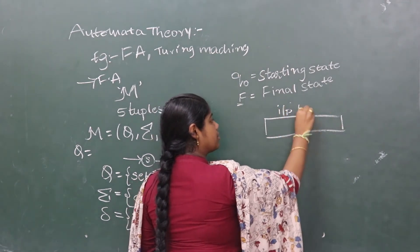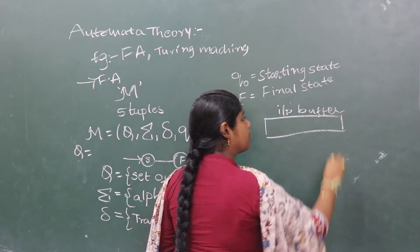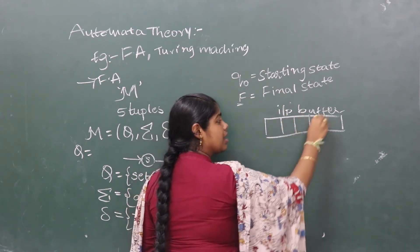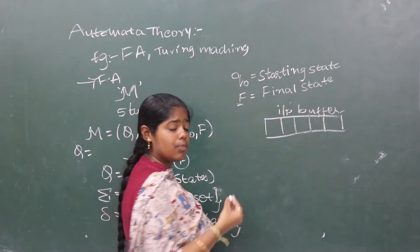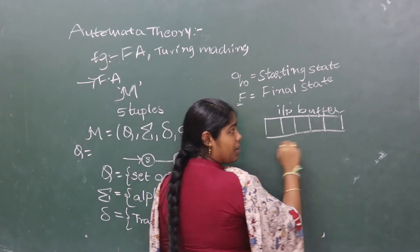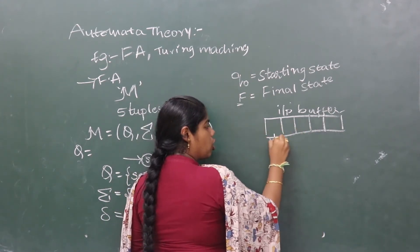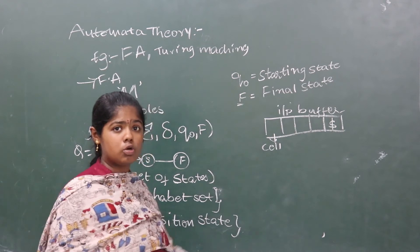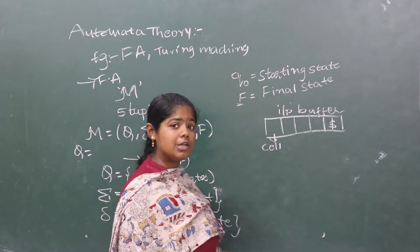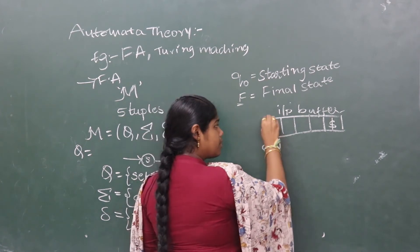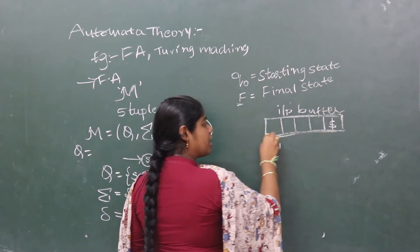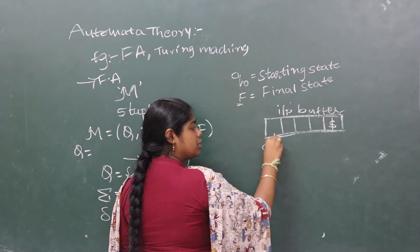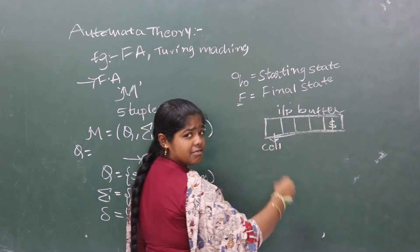They use one input buffer. What is this input buffer? Input buffer is some memory. This memory is used to store the input string. Input buffer is divided into cells. This is called a cell. In these cells, the last cell is always used to store dollar symbol. What is this dollar symbol? Dollar symbol indicates the end of input string. Input buffer is used to store one input string. This input string is stored by dividing into cells. The data in it needs to be retrieved.